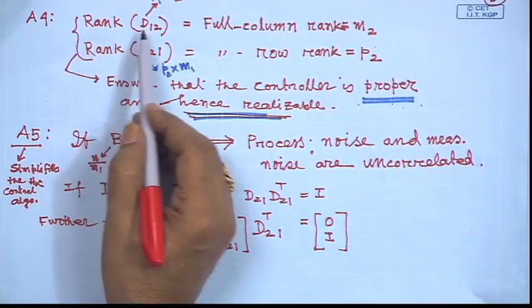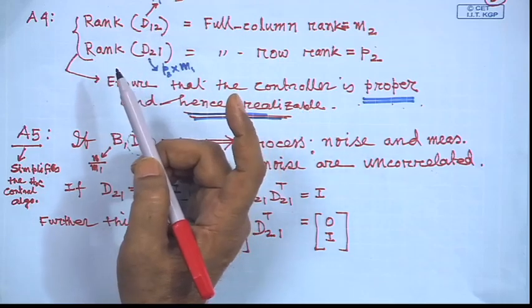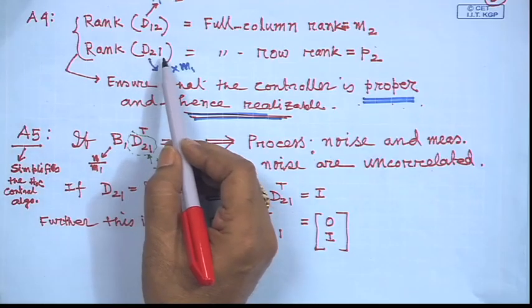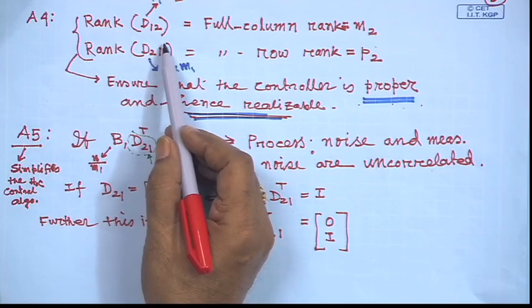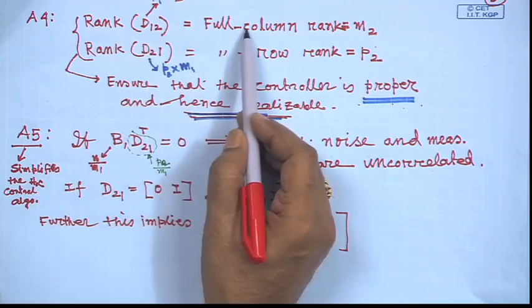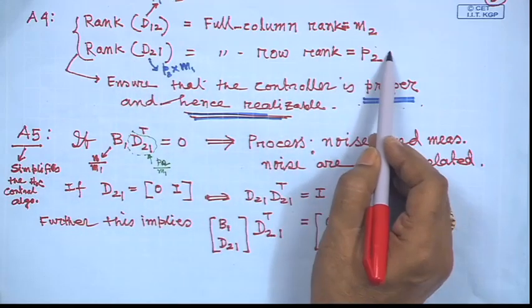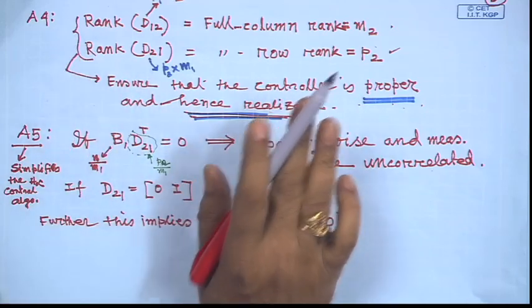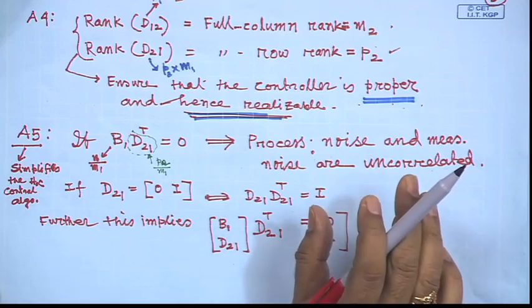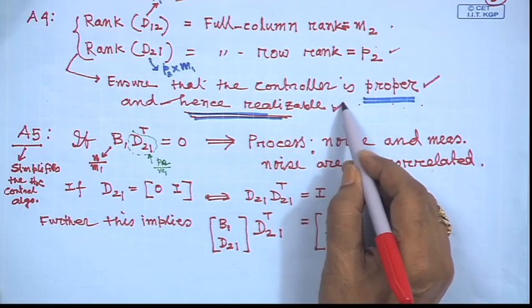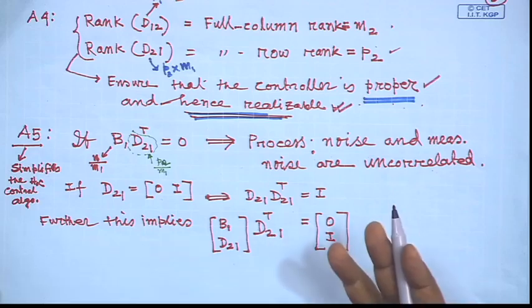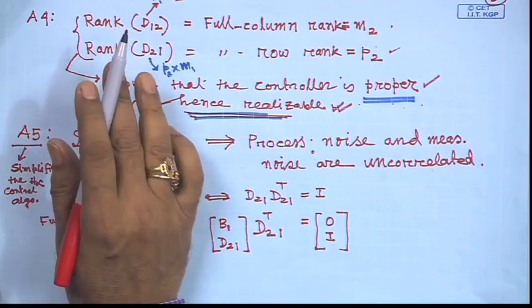These rank conditions also ensure there is no pole-zero cancellation on the imaginary axis, which guarantees internal stability. Condition A4 requires that D12 has full column rank (rank = m2) and D21 has full row rank (rank = p2). These two conditions ensure that whatever controller is designed using H-infinity approach will be proper — not improper — and hence realizable.